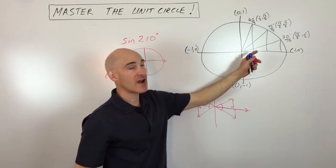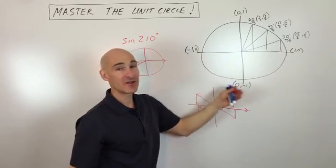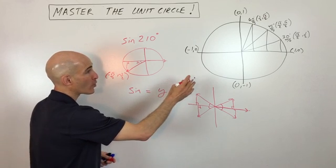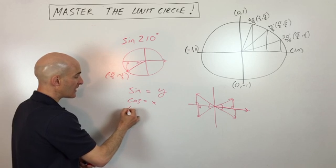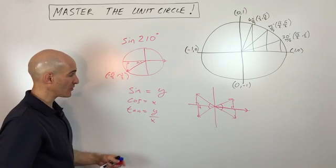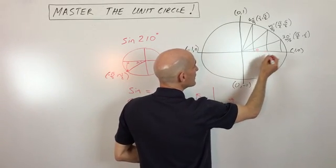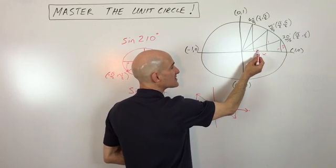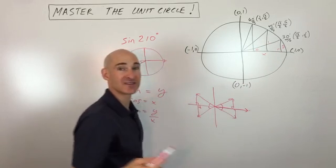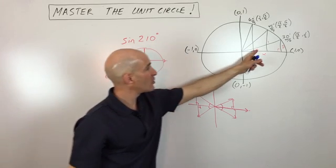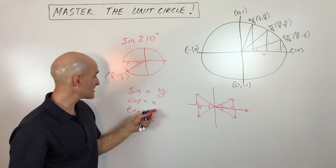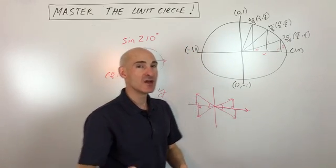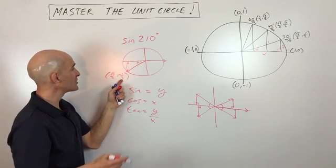The next part of the unit circle is: how do you find the sine, cosine, and tangent of these angles? Sine is always the y-coordinate, cosine is always the x-coordinate, and tangent is y divided by x. This works because sine is opposite over hypotenuse — but the hypotenuse is 1 on the unit circle, so anything divided by 1 is itself. Same for cosine: adjacent over hypotenuse equals x. And tangent is opposite over adjacent, giving us y over x. So to finish: the sine of 210 degrees is just the y-value, which is negative 1 half.